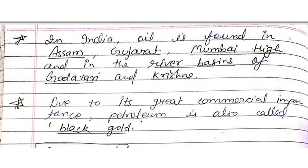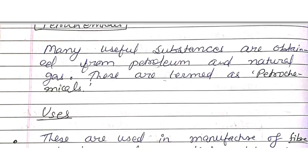In India, oil is found in Assam, Gujarat, Mumbai High, and in the river basins of Godavari and Krishna. Due to its great commercial importance, petroleum is also called black gold.